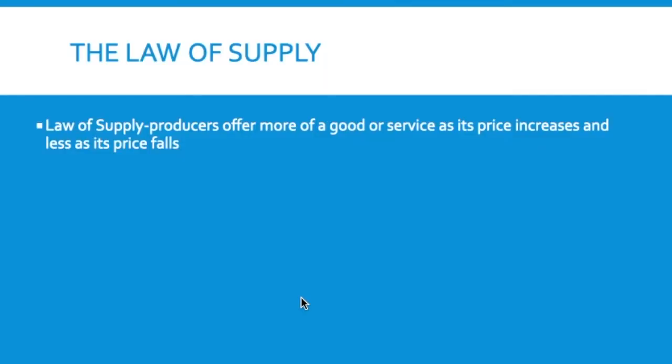Today's video is on supply, chapter five. Look at the law of supply — the opposite of demand. The law of supply says producers are going to offer more goods or services as its price increases, and less as it falls.